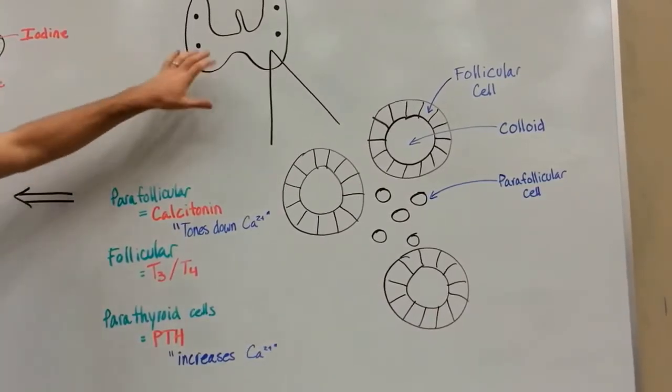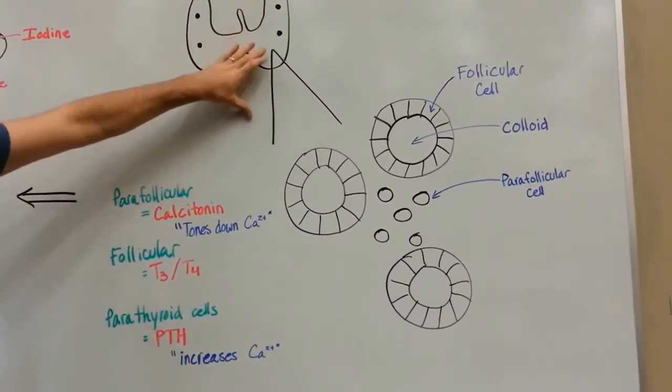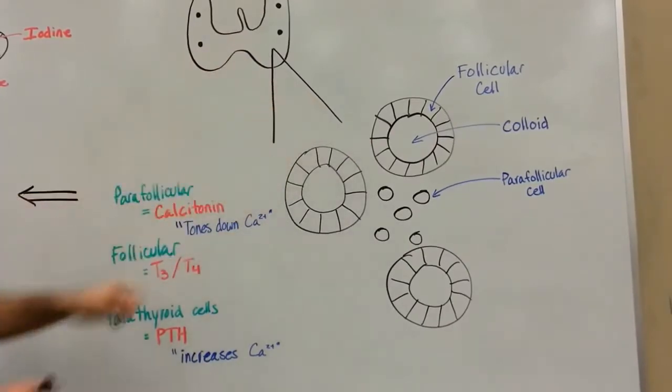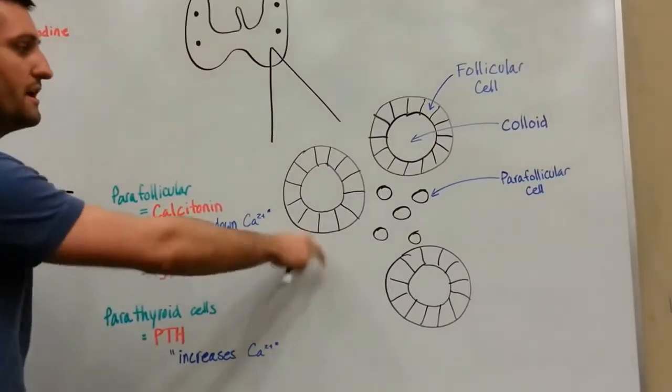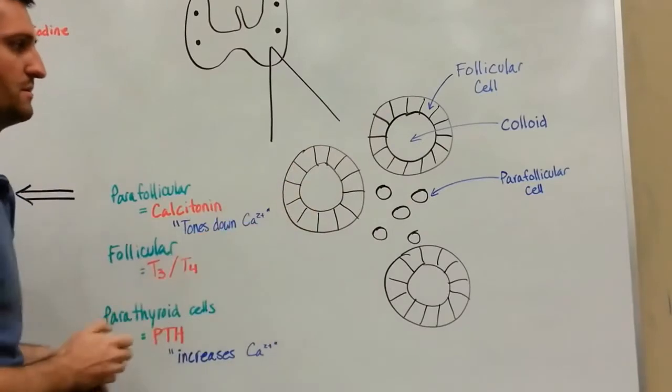Let's take a look at the thyroid gland, a closer zoomed-in image. So once we zoom in on the thyroid, you're going to see these kind of round accumulations.